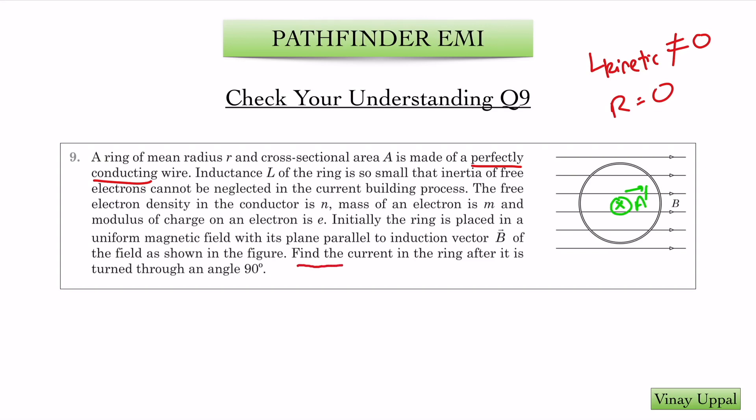So what is the question? Find the current in the ring after it is turned through an angle of 90 degrees. In the previous video, I had told you that the axis which was missing in the question is the diameter perpendicular to the magnetic field and it is rotated in this manner. So the ring is rotated about its diameter. Let us have a look at how we will solve this question.